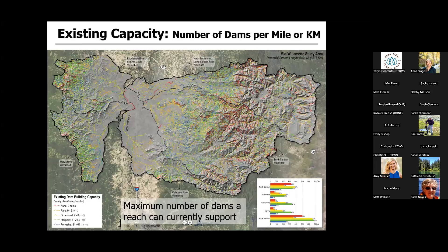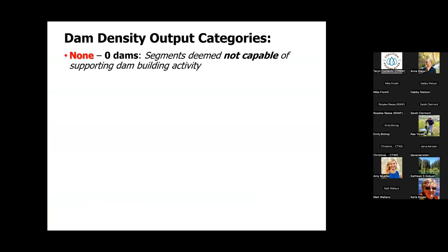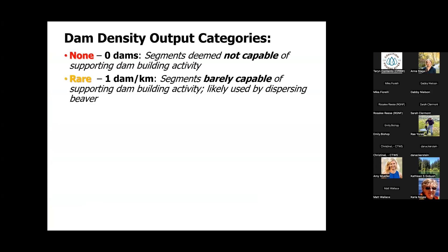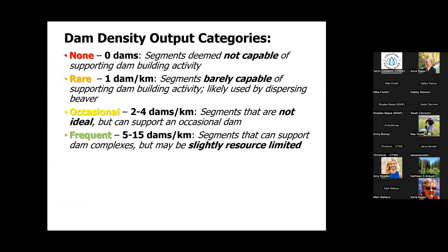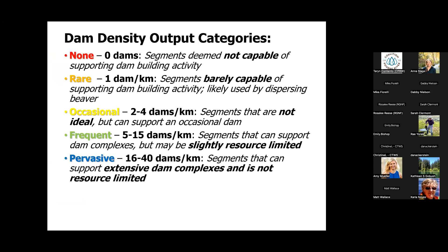This is an existing dam capacity output with five categories. 'None' is predicting no dams can be supported. 'Rare' would be just one dam — perhaps a dispersing beaver building in really tough places that constantly blow out. 'Occasional' — not ideal settings, occasional dam can be supported. 'Frequent' — pretty much ideal, maybe slightly resource-limited. And 'pervasive' — these are areas where extensive dam complexes can be supported, not resource-limited.